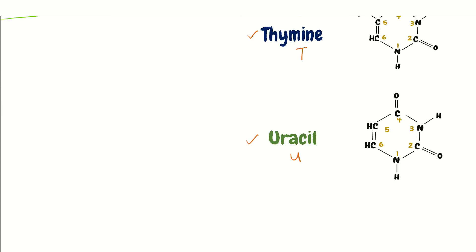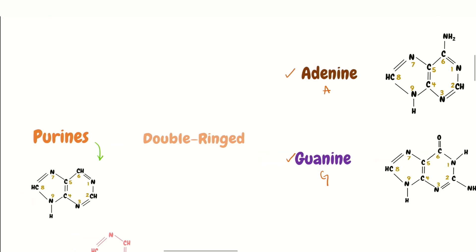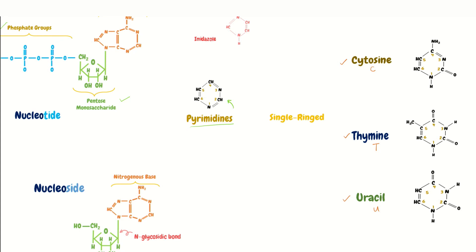Now adenine and guanine, as you can see here with the double rings, are purines. Now cytosine, thymine, and uracil are pyrimidines - quite a long name but small structures, single ring pieces. So that was a brief introduction about nucleotides and their structures.